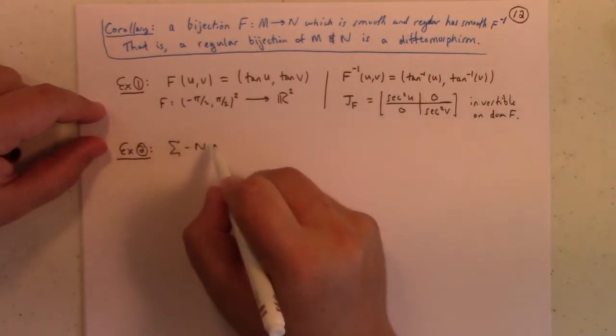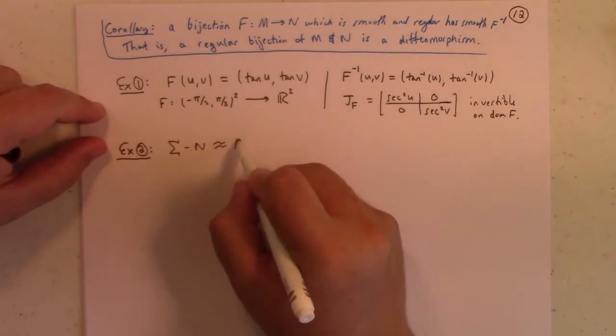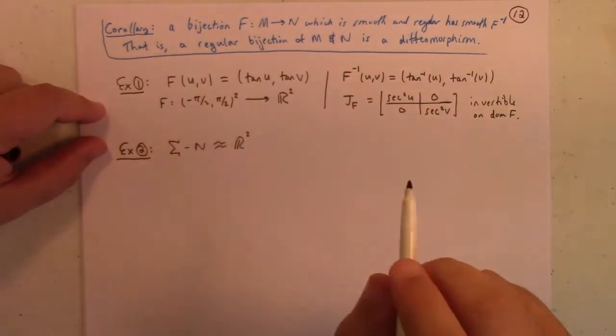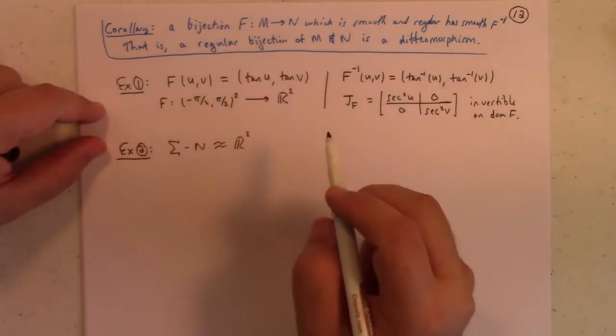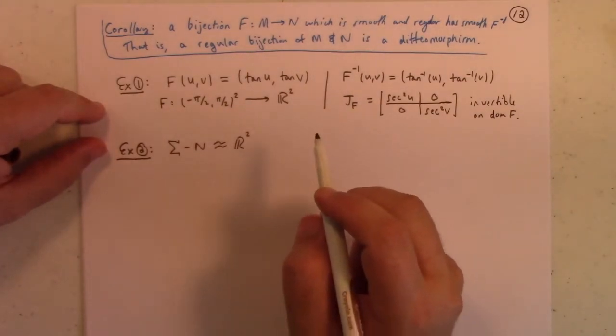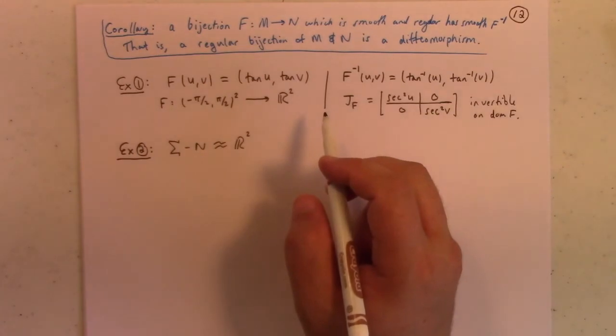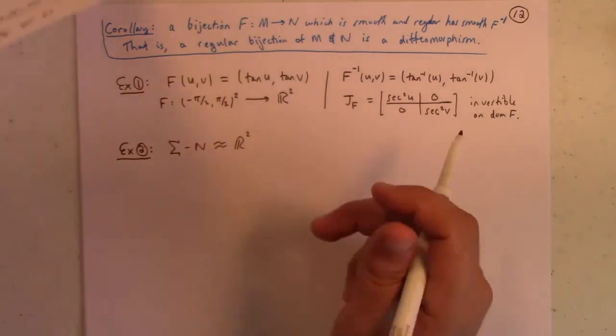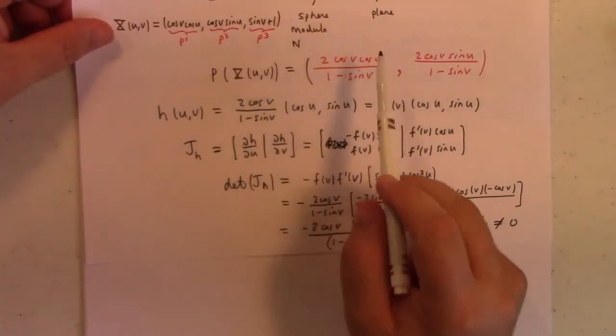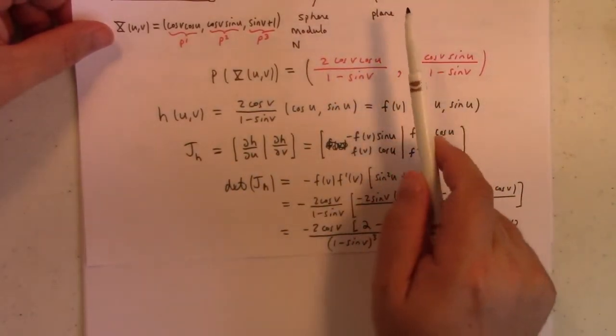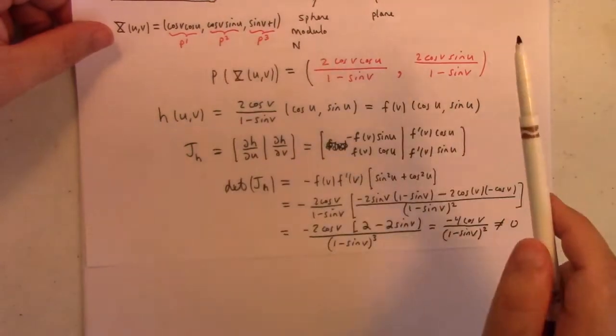The sphere with the north pole removed, diffeomorphic to the plane. That's essentially that example we were looking at before. Or, the p-mapping, I think he called it, what did I call it? What is that thing? Yeah, this one back here. This gives you the diffeomorphism of the sphere modulo the north pole and the plane.